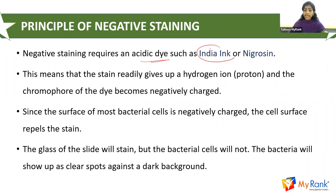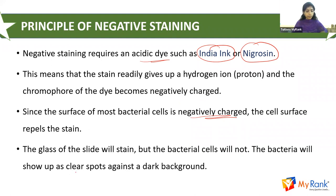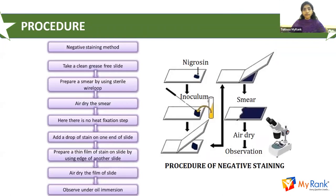The principle of negative staining: it requires an acidic dye such as Indian ink or nigrosine. The stain readily gives up a hydrogen ion and the chromophore of the dye becomes negatively charged. Since the surface of most bacterial cells is also negatively charged, the cell surface repels the stain. The background gets stained, but the bacterial cells will not — they show up as clear spots against the stained background.